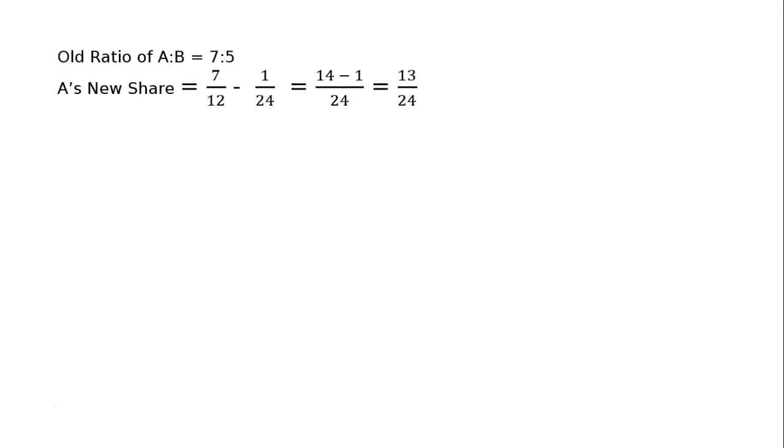So B's value, B's new share: 5 upon 12 minus 1 upon 8. So 5 upon 12 minus 1 upon 8, surrender - not surrender, acquired. So common denominator 24. 2 times 5, 10 upon 24 minus 3 upon 24. Then 10 minus 3 is equal to 7 upon 24.